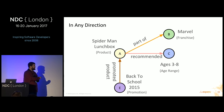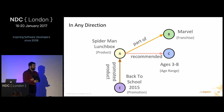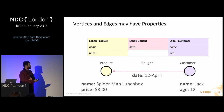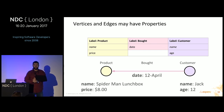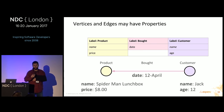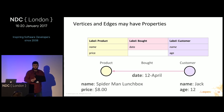The Spider-Man lunchbox is part of the Marvel franchise and recommended for ages three to eight, and now also has an inward-facing edge from the back-to-school promotion for 2015. Both vertices and edges may have properties associated with them. This is one of the biggest differences between a graph database and a relational database. In a relational database, the relations between entities can't really contain metadata of their own — they're essentially just foreign keys.